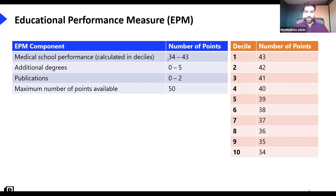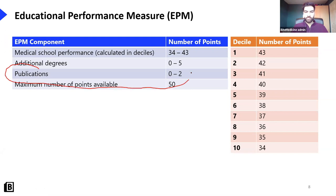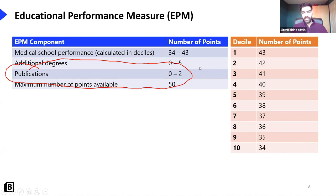For additional degrees you can get another five points — for those of you who've done master's, BScs, BAs, PhDs, you get five points. The bit I really want to focus on is publications. There's a lot of emphasis and stress placed on publications at medical school and students often get really stressed about it, but ultimately it only counts for a maximum of two points. If you can get them that's really good, but you're better off spending your time smashing your exams and making sure you come in the higher deciles.